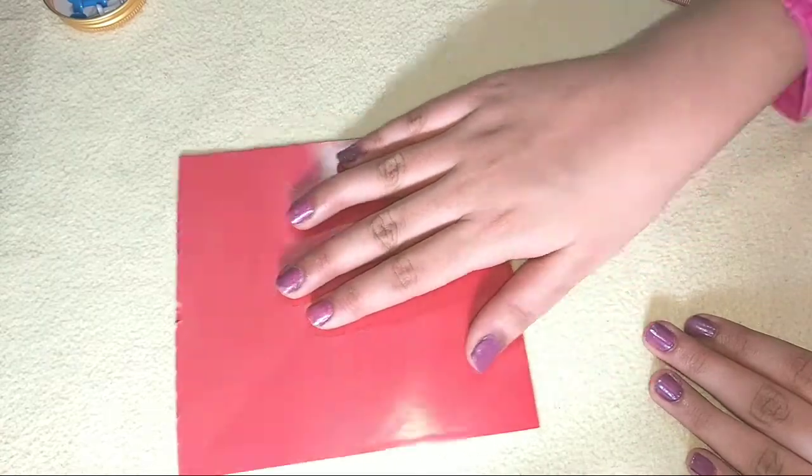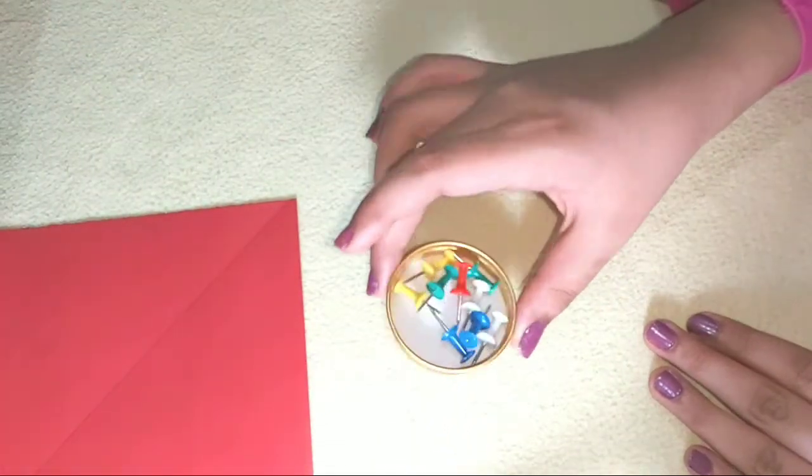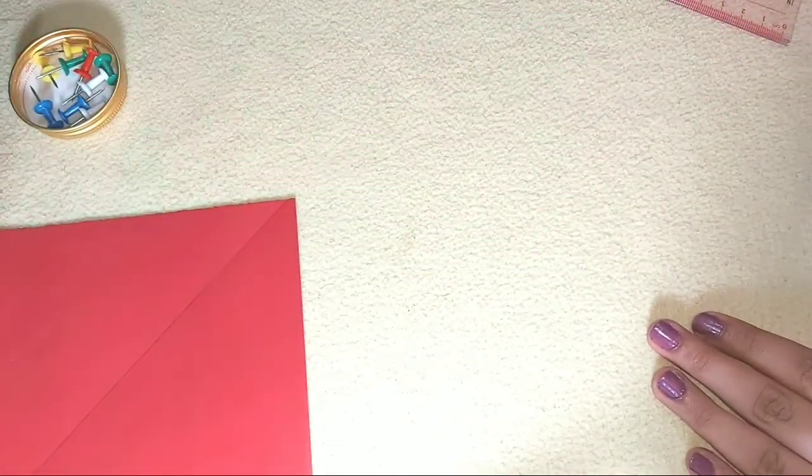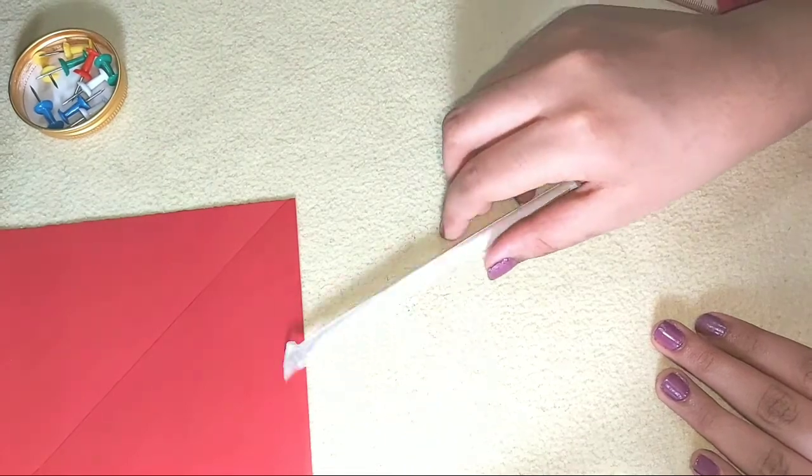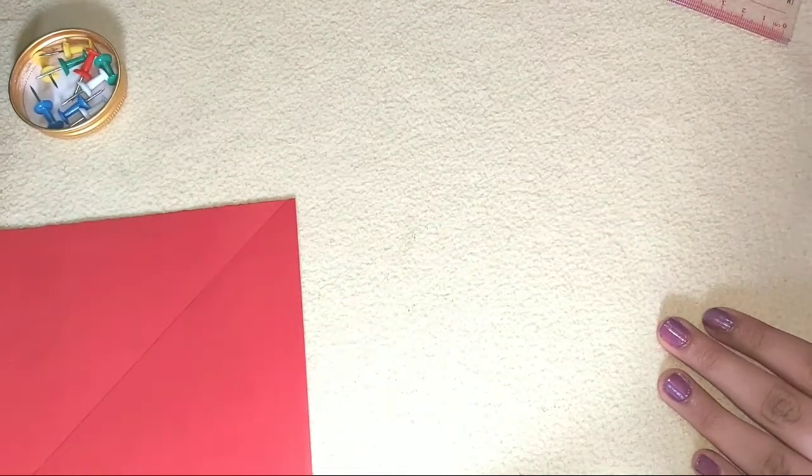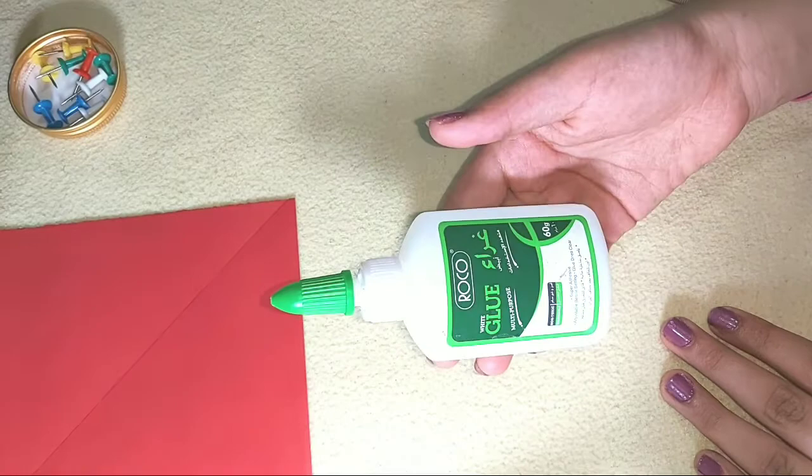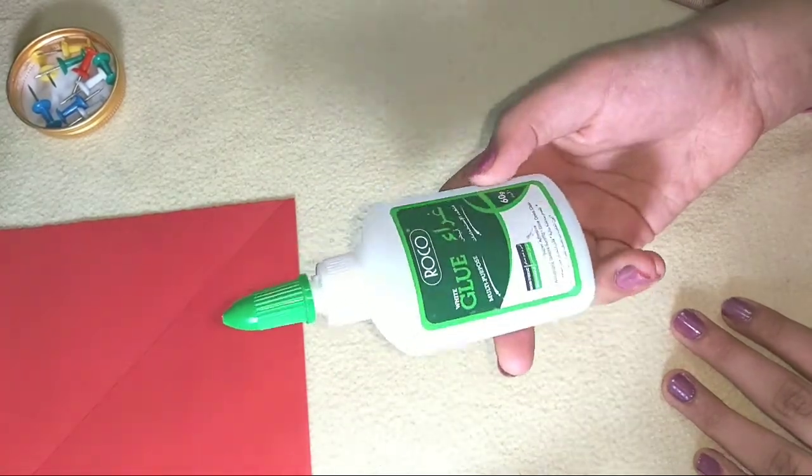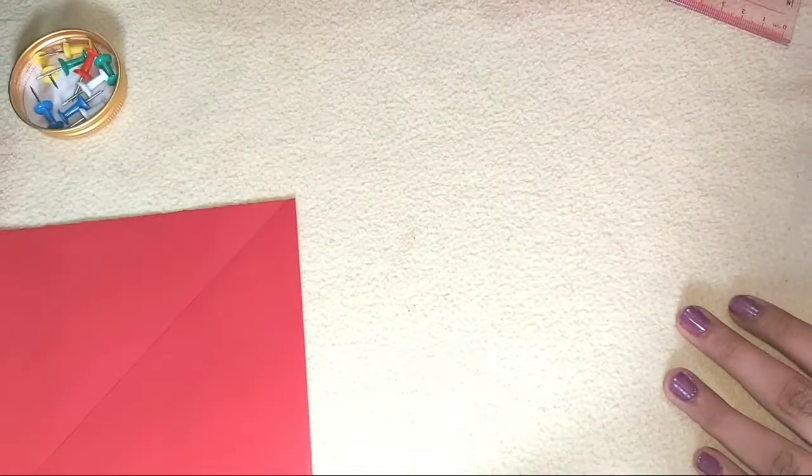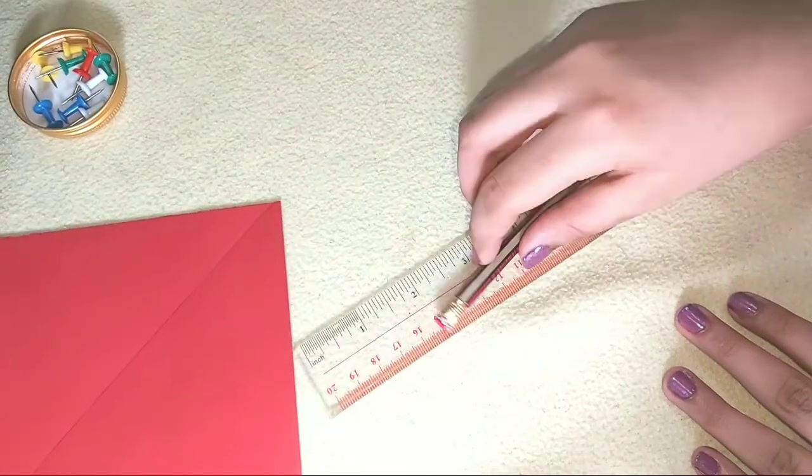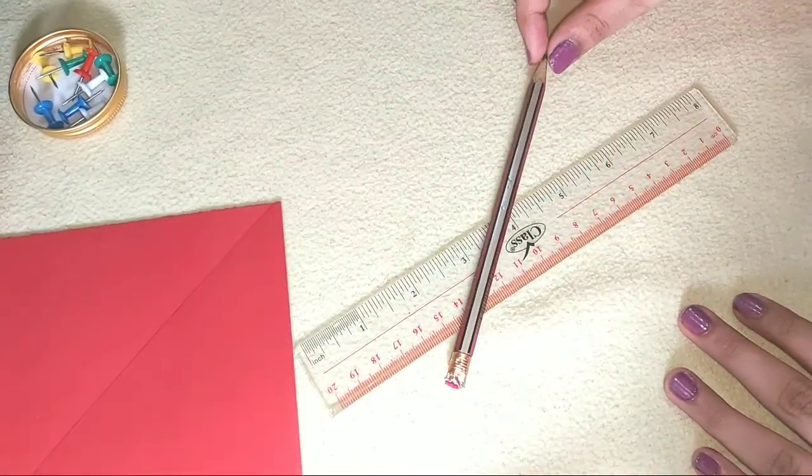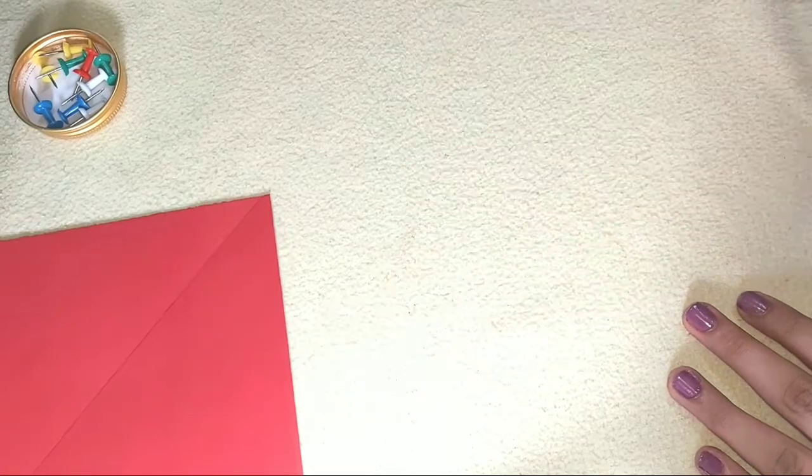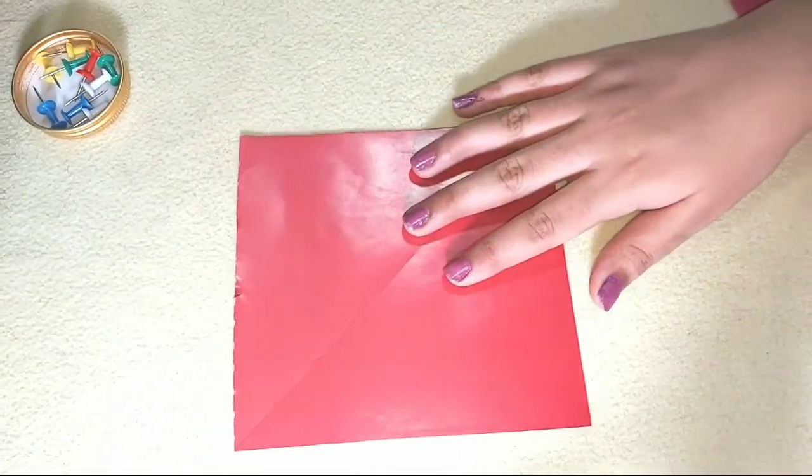Next one: pinwheel. For that we need a square paper, some pins, one straw, one glue. I took white glue, you can take glue stick also, okay? Next is one pencil and one scale. Let's start.